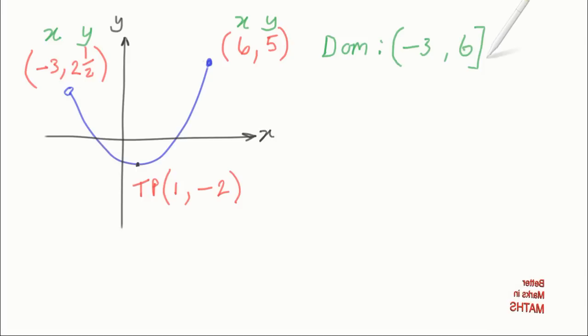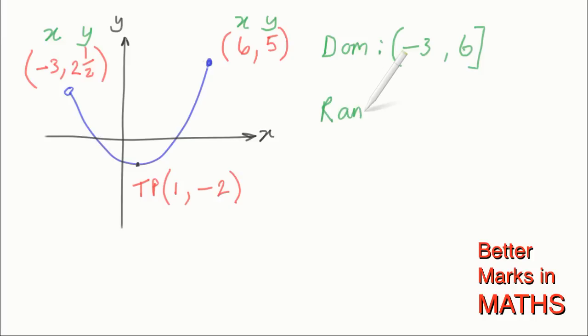The x values on the graph go from minus 3 to 6. And to find the range, all you have to do is find the lowest y value, and it's not actually this one here, it's this value down here. And once again, x coming first, y coming second.